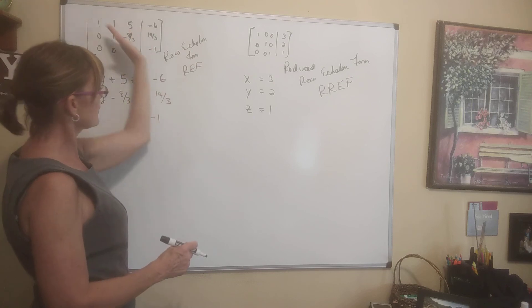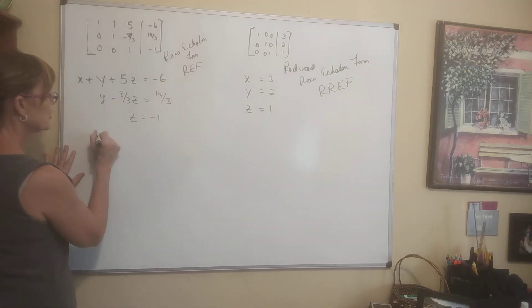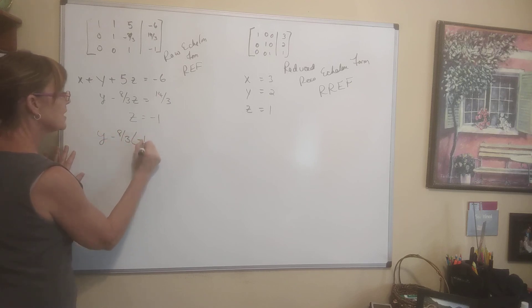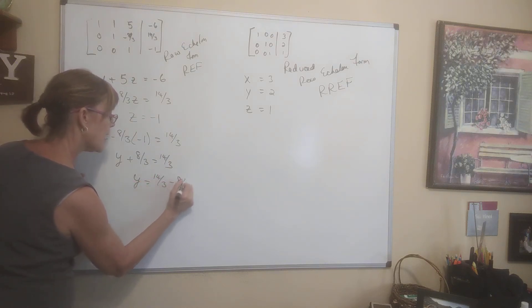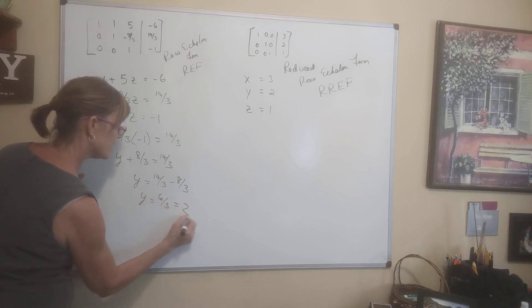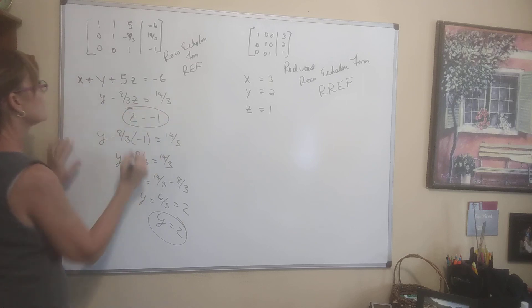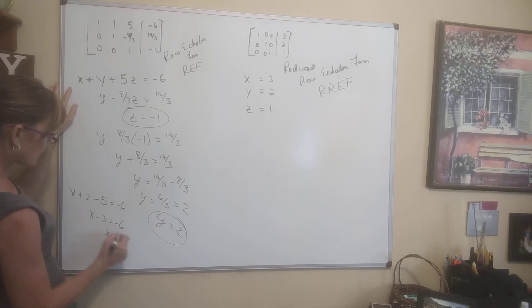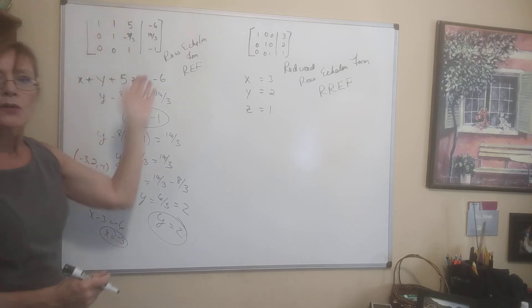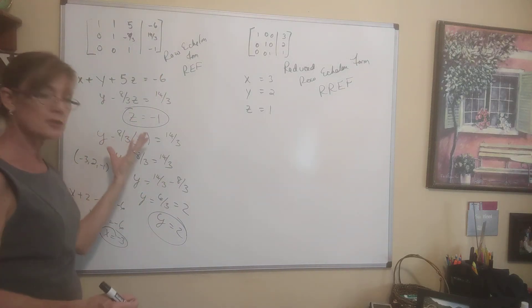And as you know, from doing a system of equations by hand, once you have a value, a number, you can use back substitution and it's easy to solve for the rest. So they would settle for doing this much of getting your matrix in that form. And then once you have a value, you can just say, okay, well, Y minus 8 over 3 times negative 1 is 14 over 3. So Y plus 8 over 3 is 14 over 3. Y is 14 over 3 minus 8 over 3, which is 6 over 3. So Y is 2. Okay, but Y is 2, Z is negative 1. Let me throw that in the top equation. X plus 2 plus 5 times negative 1 minus 5 is negative 6. X minus 3 is negative 6. X is at 3, negative 3. So here's my order triple, negative 3, 2, negative 1.